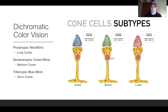Normal color vision in humans is usually trichromatic, meaning that there are three cones: the short cone, the medium cone, and the long cone, as you can see on the right. The short cone allows us to perceive the color blue, the medium cone allows us to perceive the color green, and the long cone allows us to perceive the color red.